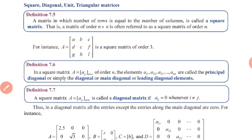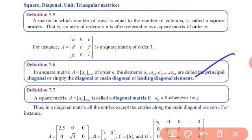Next is the principal diagonal, also called the main diagonal or leading diagonal. In a square matrix A = [aij] of order n, the elements a11, a22, a33, up to ann are called the principal diagonal or leading diagonal or main diagonal of the matrix.